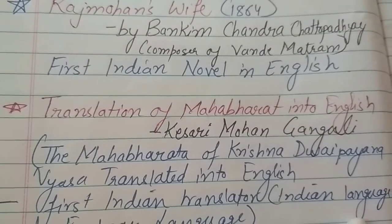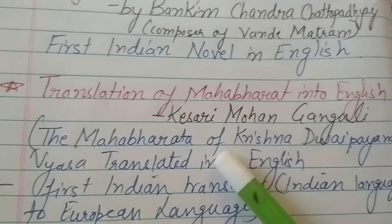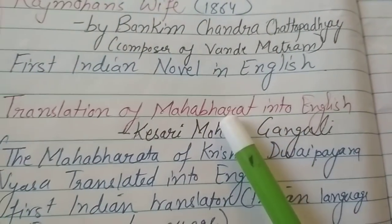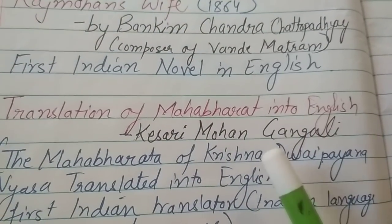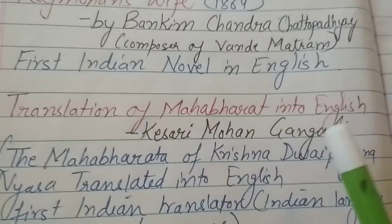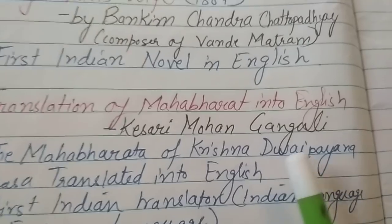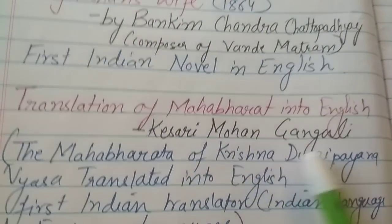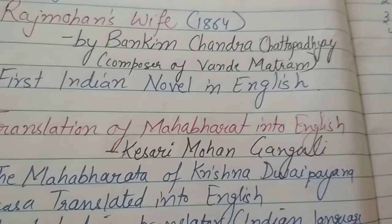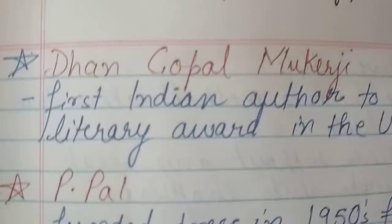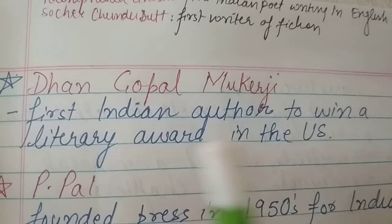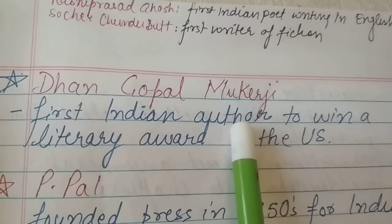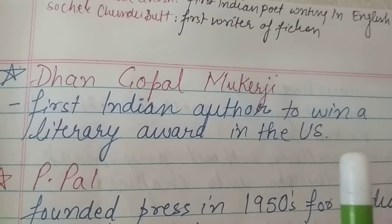The first translator who translated an Indian language into a European language was Kisari Mohan Ganguli, who translated the Mahabharata epic into English. The title of the book was 'The Mahabharata of Krishna-Dvaipayana Vyasa translated into English'. Dhan Gopal Mukherjee was the first Indian author to win a literary award outside India, winning a literary award in the US.